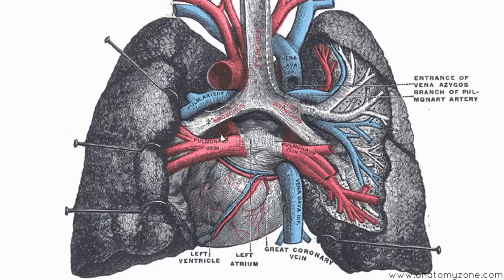I've just switched to this diagram which shows the exact same view we're looking at — the posterior view. You can see the trachea coming down here, branching off into the left and right main bronchi. And you can see the pulmonary arteries at the top and the pulmonary veins inferiorly entering into the lung at the hilum.